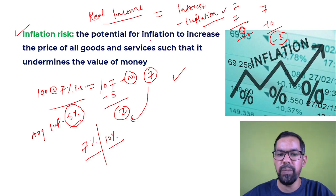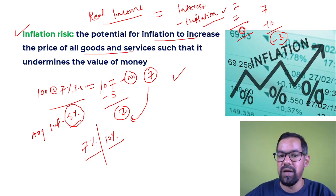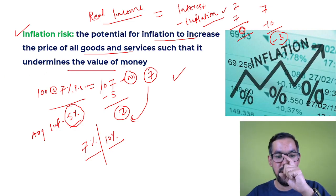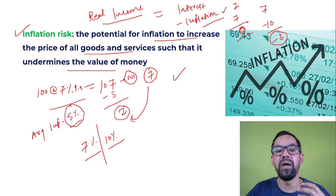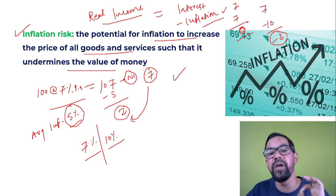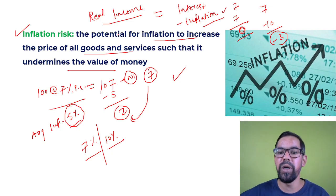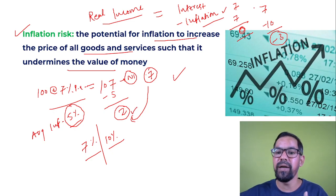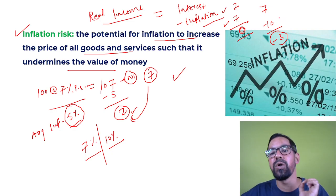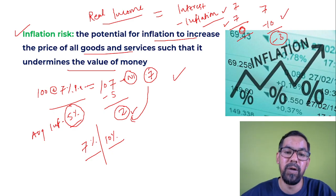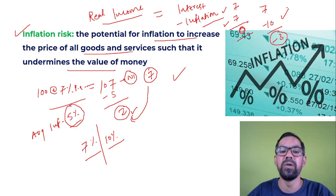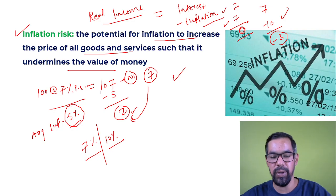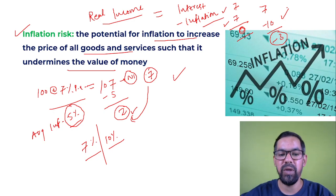Inflation risk is the potential for inflation to increase the prices of goods and services and undermine the value of money. As inflation increases, every rupee you own buys a smaller percentage of goods and services. In normal conditions you own 107 rupees with a profit of 2 rupees after subtracting inflation. But if inflation grows to 7%, you get nothing from the investment. If inflation grows to 10%, you make a loss of 3% — the value of your money is going down.